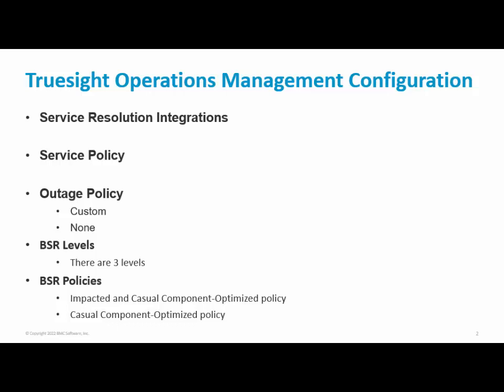Outage Policies are used to define a component of interest and a criteria for outage creation. The following options to manage outage policies are supported: Custom and None. Select the Custom option to create multiple outage policies for different CIs. Select None when you do not want to track your CIs for outages and you do not want to create an outage ticket.